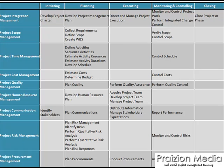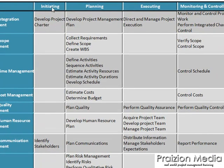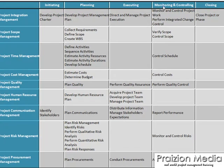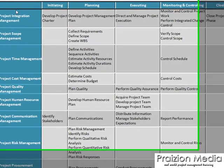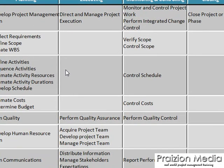Looking at this process map, you've probably gone through it several times. You realize that at the top you've got the process groups: initiating, planning, executing, monitoring and controlling, and closing. And on the left hand side you have the knowledge areas: project integration management, project scope management, and so on. In the middle in the grey area you can see the processes.